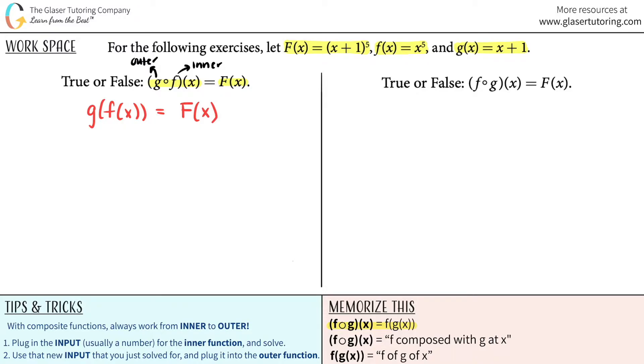Well, now let's start plugging in. So now we have to actually use our functions that are up here to plug in for this composite function. So remember, with composite functions, we always work from inner to outer. We're always going to plug in an input, it's usually a number for the inner function and solve. However, the inner function, the innermost parenthesis is the F of X function and the G function is the outer function. There's no number here. It's just X.